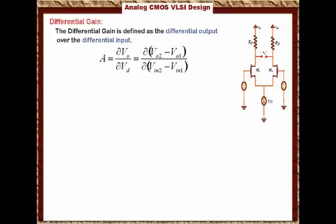So this is the mathematical definition of the differential gain. Basically, what that means is if we change the differential input voltage, the differential output voltage should also change. Now the ratio of the differential output voltage over the differential input voltage is the differential gain. So how much the output changes relative to the change in the input is the differential gain.